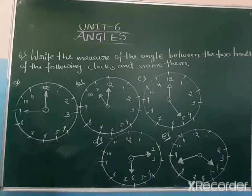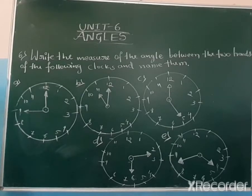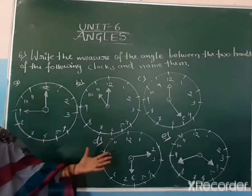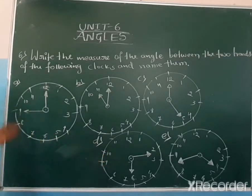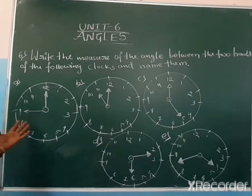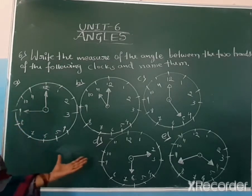Now we continue the class. Question six: write the measure of the angles between the two hands of the following clocks. Here, totally six clocks are given, and they are showing different types of times.